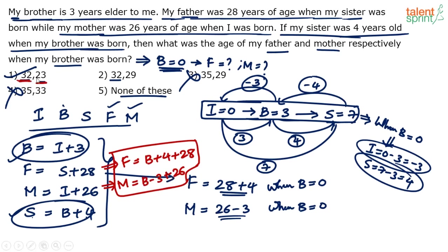So solving using equations also gives 32 and 23 — straightforward. You can choose whichever method is easier. The timeline approach is an interesting concept too. Sometimes with more complex versions of this type of question you may need to use the timeline approach as well.